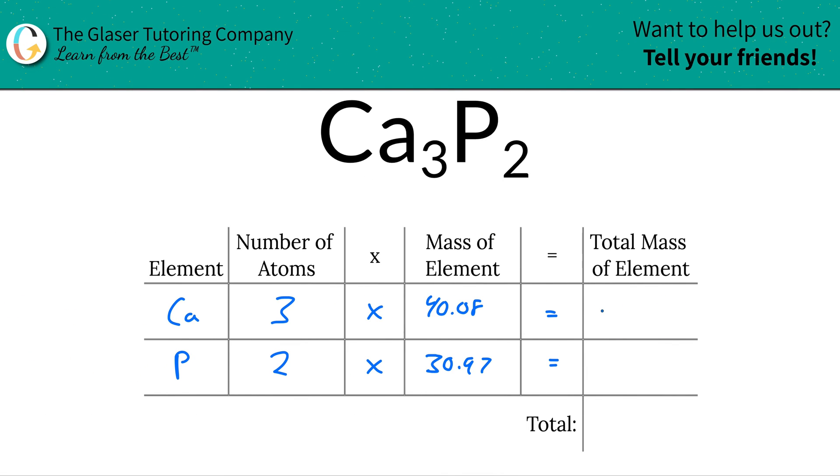Then, the total mass of the element, now we're going to simply multiply this row across. So 40.08 times 3 is going to work out to be about 120.24. And then here, 30.97 times 2 should work out to be about 61.94.